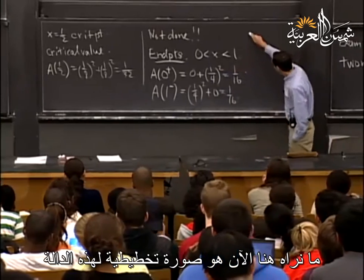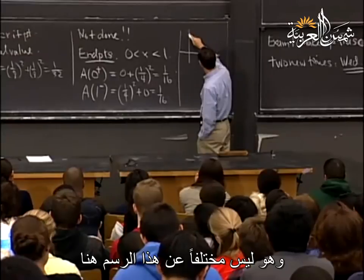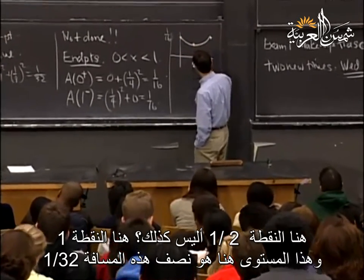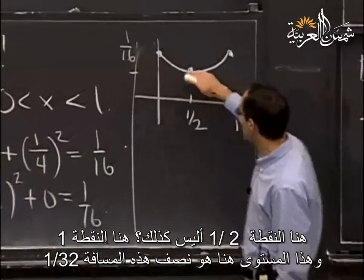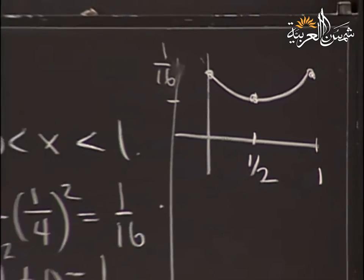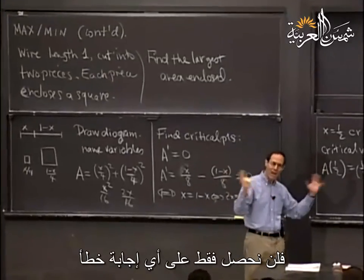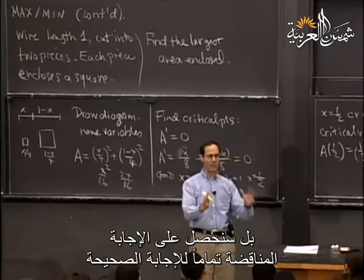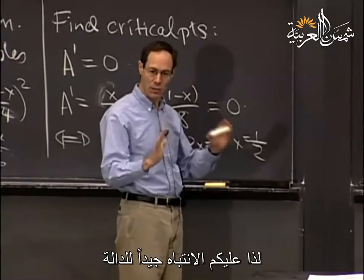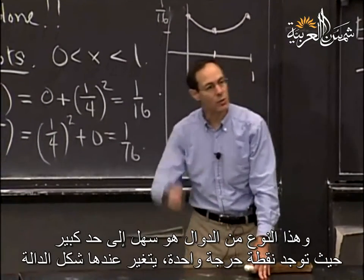The schematic picture of this function is that its level at the endpoints is 1/16, and then it dips down to 1/32 at x = 1/2 and goes back up. So when we found the critical point, we did not find the largest area enclosed — we found the least area enclosed. If you don't pay attention to what the function looks like, you'll get the absolute worst answer — the polar opposite of what you want.